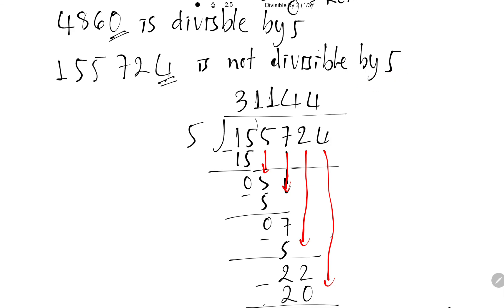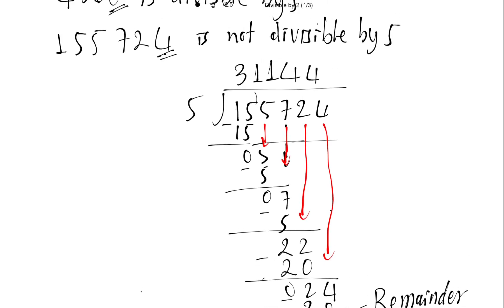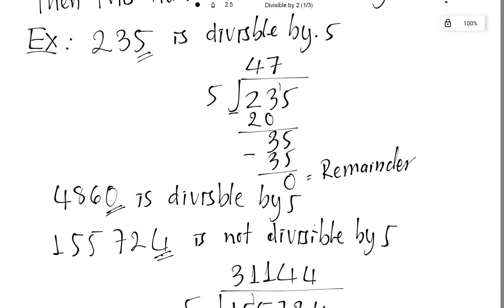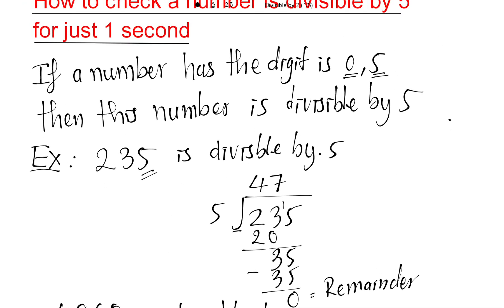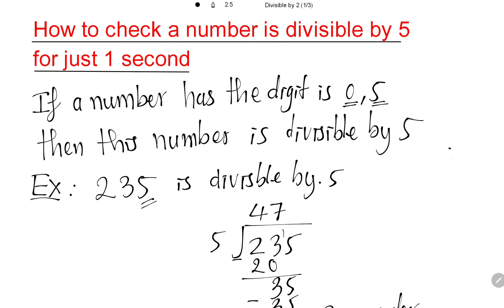Sorry for my English, as I'm not very good at it. So, I'll say the rule again: if a number has the last digit as 0 or 5, then this number is divisible by 5. That's all for this video. Thank you for watching.